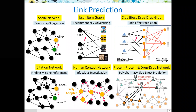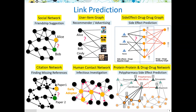The other task is link prediction. Its goal is to predict the link between nodes in a graph. For example, in a social network we can predict the potential friendship between users. Also, in recommendation systems, we can predict whether a user will be interested in an item in a bipartite graph.